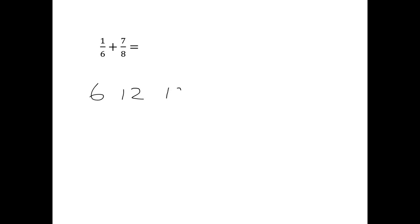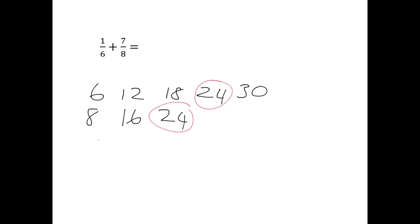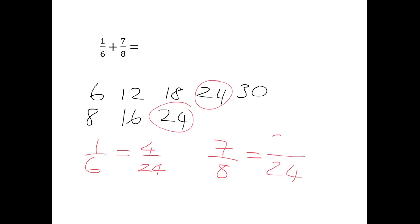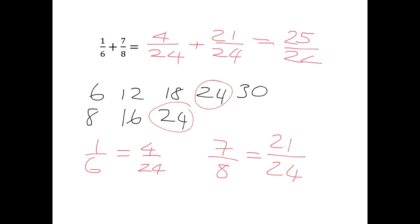Quickly try this one in your homework books: one sixth plus seven eighths. The common denominator: multiples of 6 are 6, 12, 18, 24, and multiples of 8 are 8, 16, 24 — so the common denominator is 24. One sixth becomes 4 over 24, and seven eighths becomes 21 over 24. So 4 over 24 plus 21 over 24 gives an answer of 25 over 24.